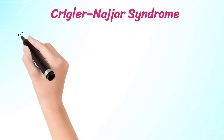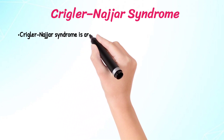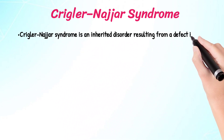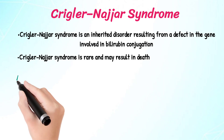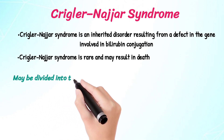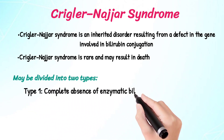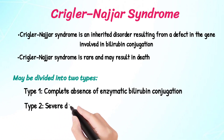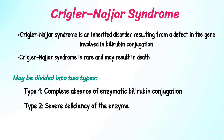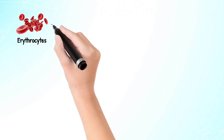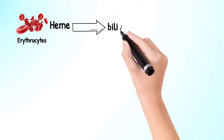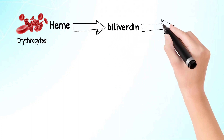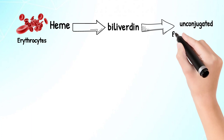Crigler-Najjar syndrome is an inherited disorder resulting from a defect in the gene involved in bilirubin conjugation. It is rare and may result in death. It may be divided into two types: Type 1 — complete absence of enzymatic bilirubin conjugation; Type 2 — severe deficiency of the enzyme. Heme liberated from above sources is oxidized to bilirubin by heme oxygenase, then immediately reduced to bilirubin by bilirubin reductase. The bilirubin formed is known as unconjugated bilirubin.